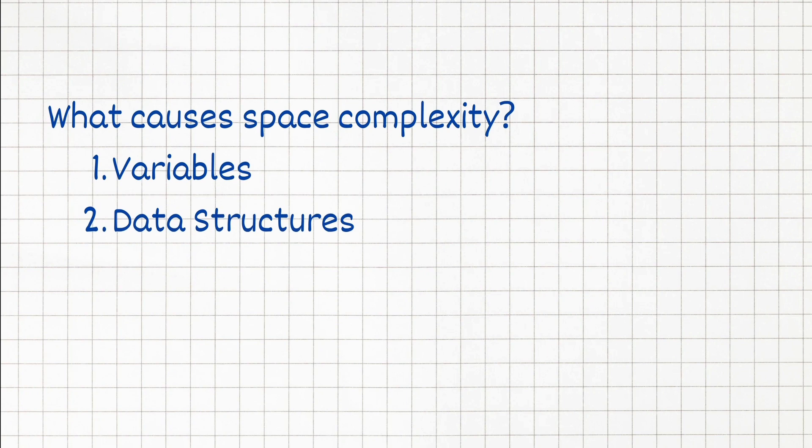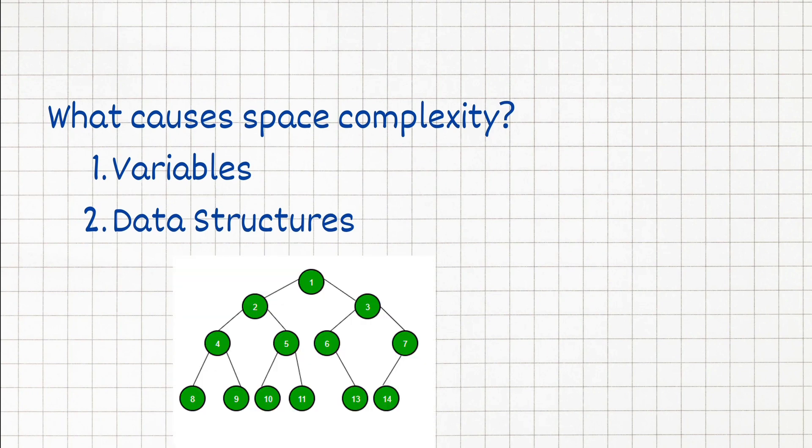Data structures like arrays, linked lists, trees, or hash tables can also affect space complexity. The size and complexity of these data structures determine how much memory they consume. For instance a binary tree with N nodes will require O of N space complexity.